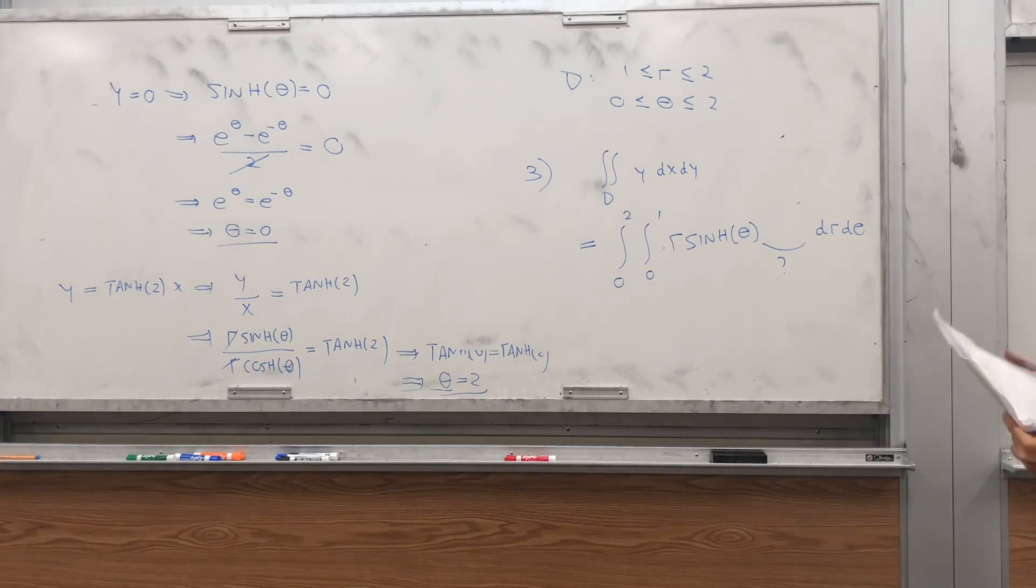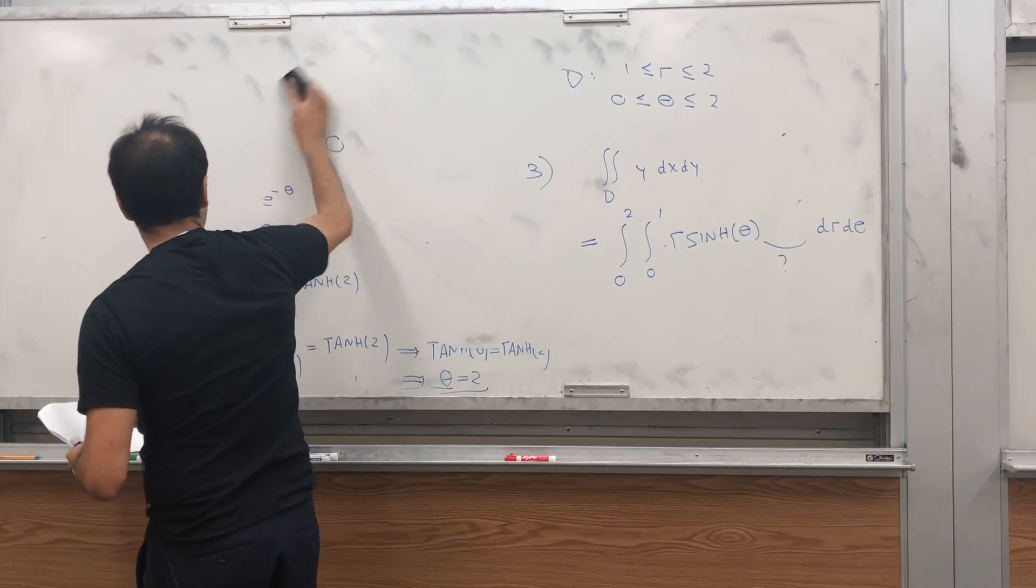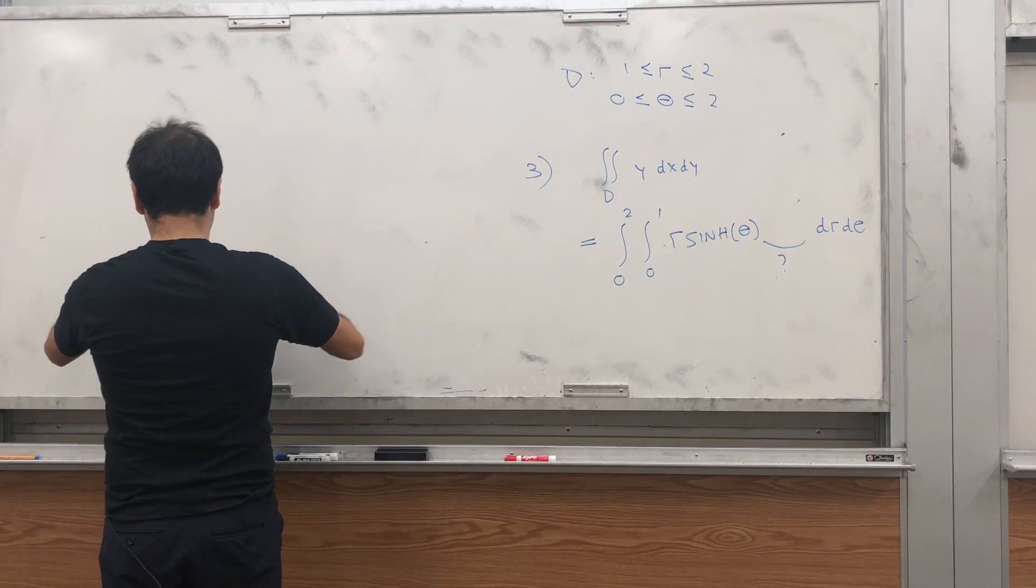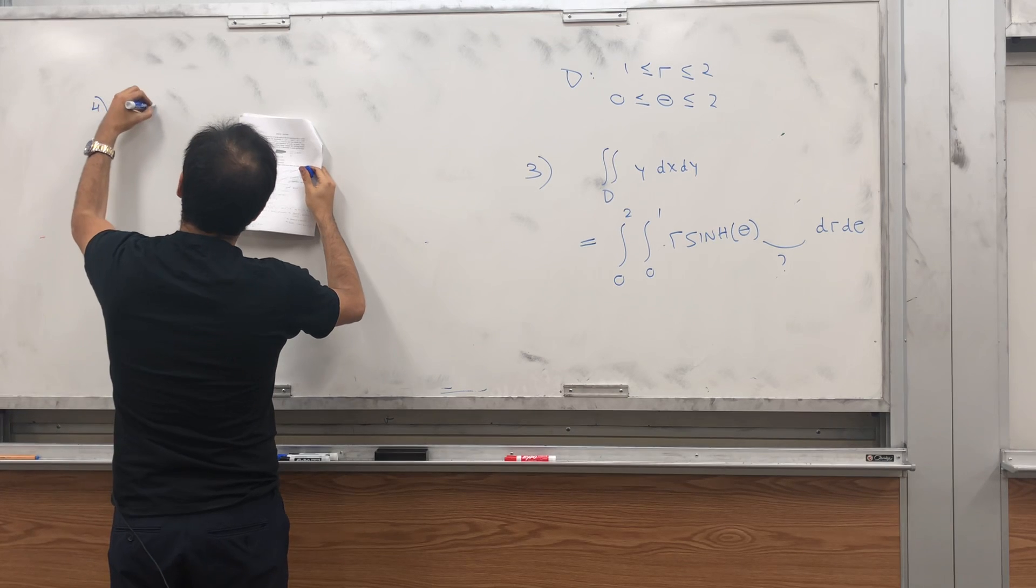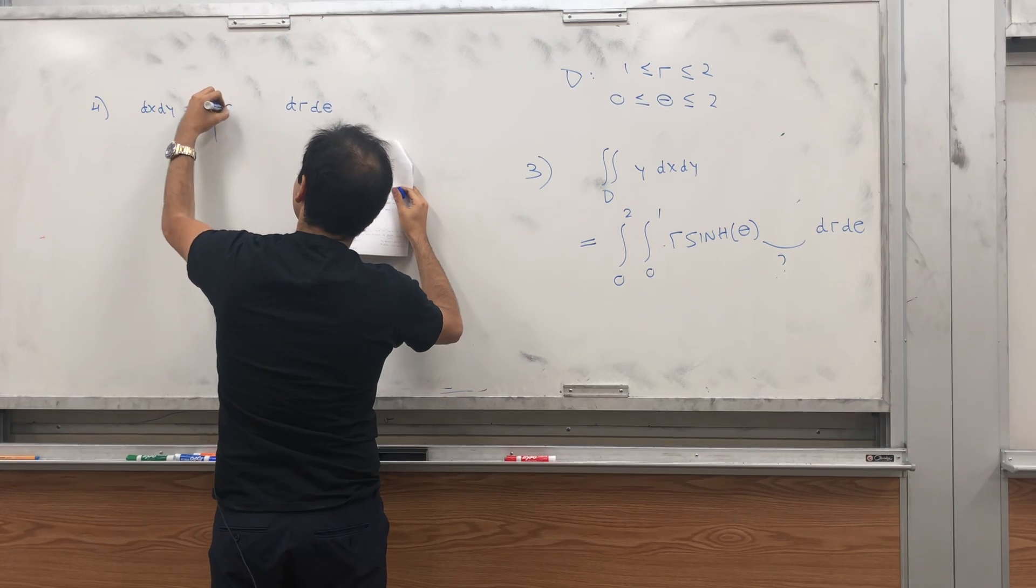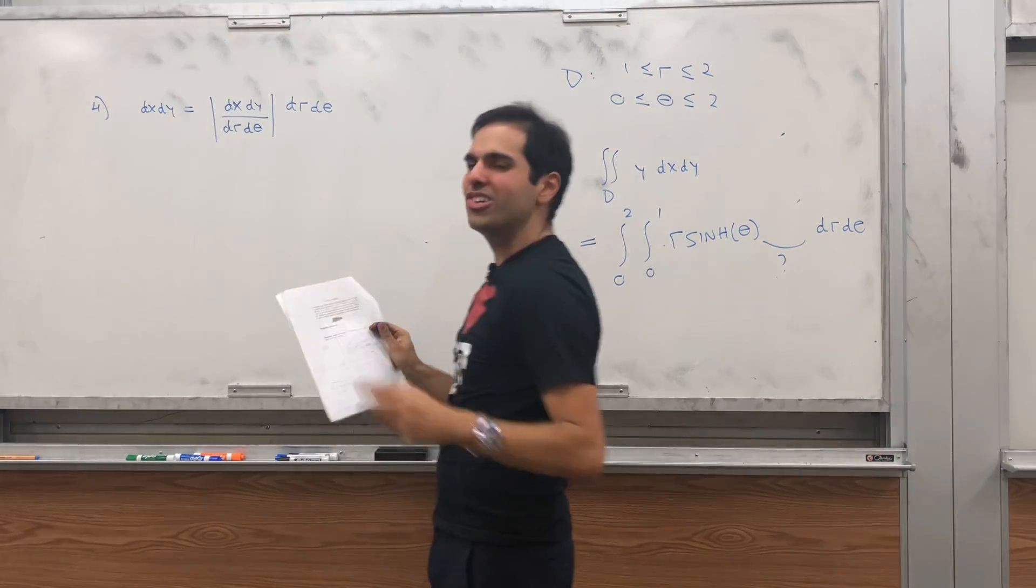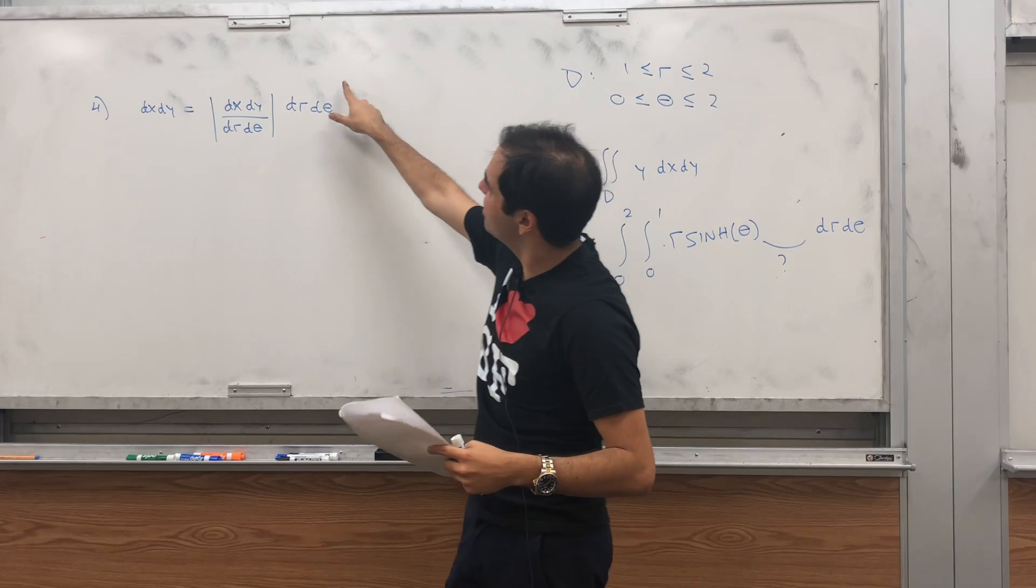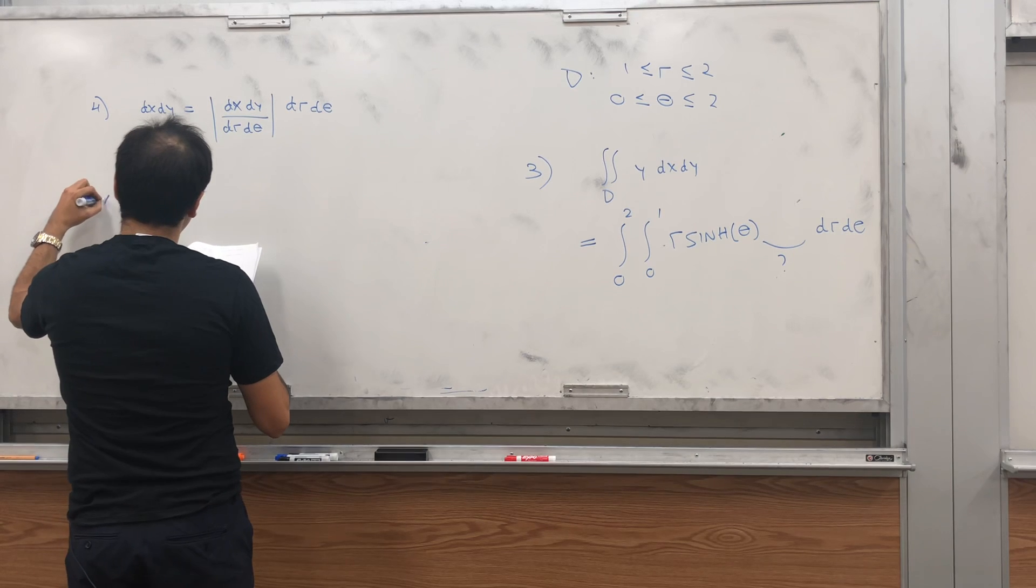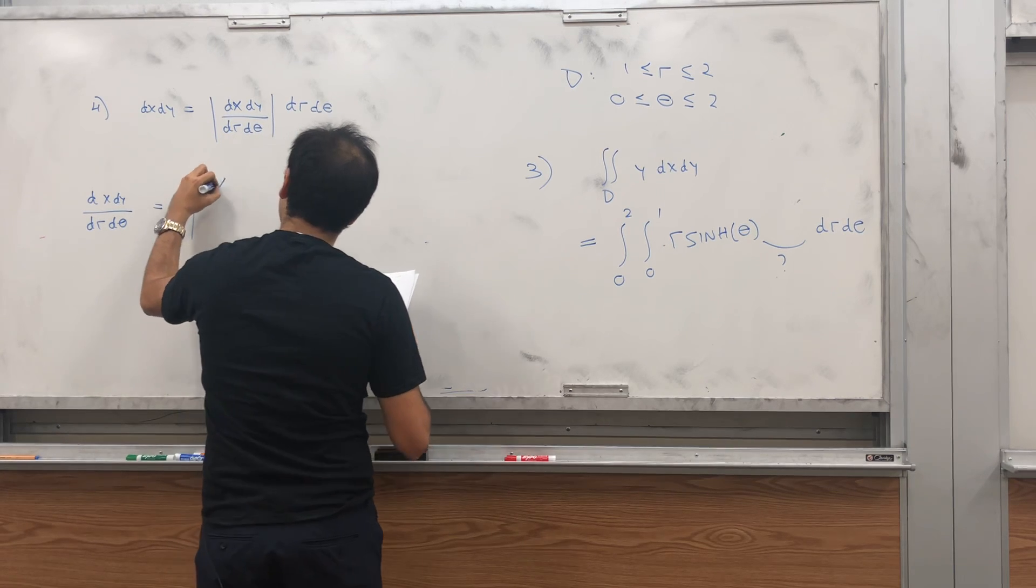And lastly, we just need to figure out what the Jacobian is. So, let's see. So, now I guess a 4. Just dx dy becomes something dr d theta. What do you put? The Jacobian. So, dx dy over dr d theta. Again, I don't like this partial notation, but I like this because you can just think of it as just canceling out dr and d theta.